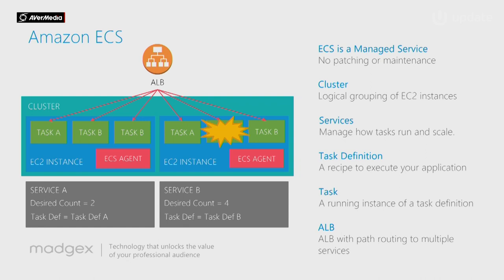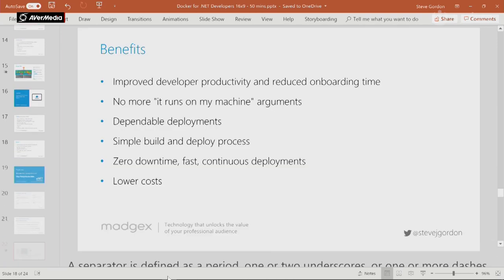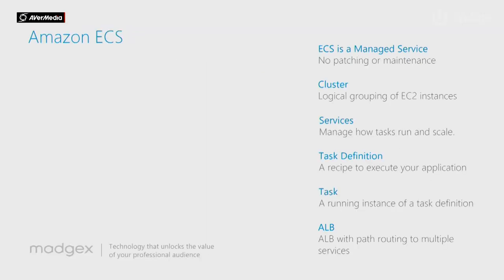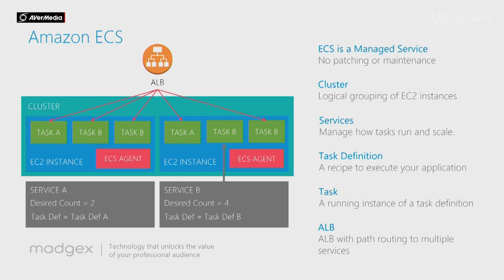In a scenario where something goes wrong and a task blows up, the load balancer detects this because it's health checking all the web-facing instances it knows about. If any stop responding, it immediately takes them out of its target group and stops sending traffic there. The service is also monitoring all tasks it started, and if any fail, its job is to start a new instance. ECS tells the load balancer the new instance has started and is now available to use.